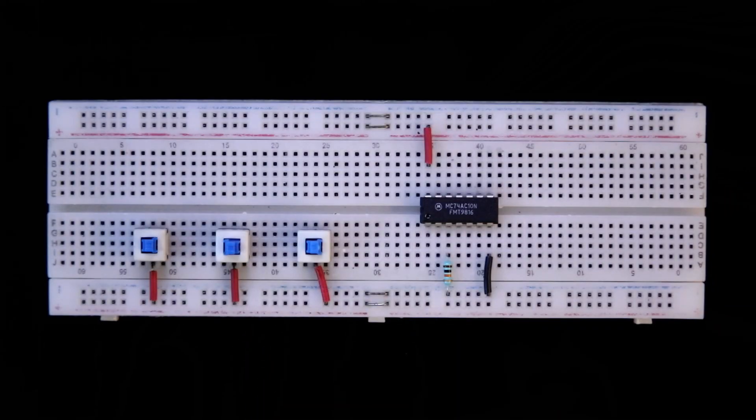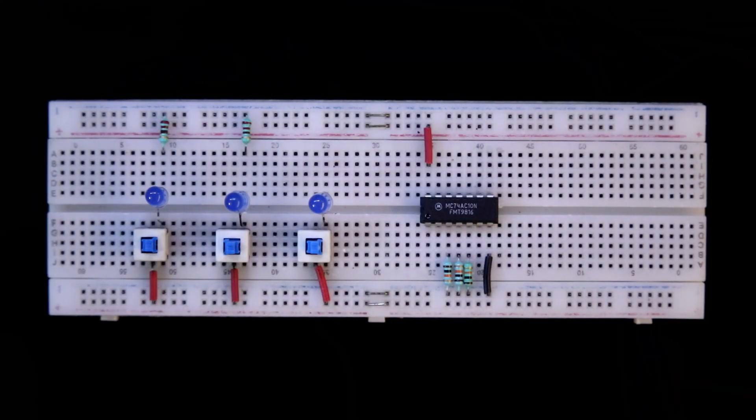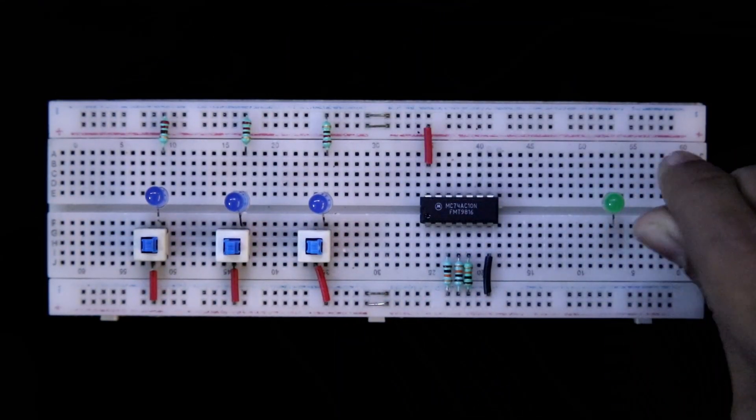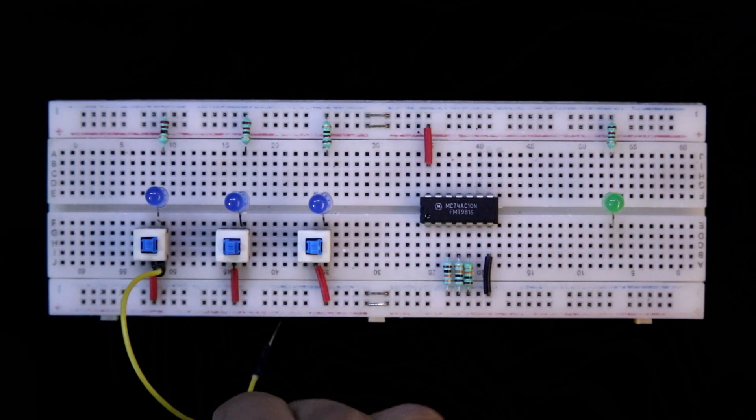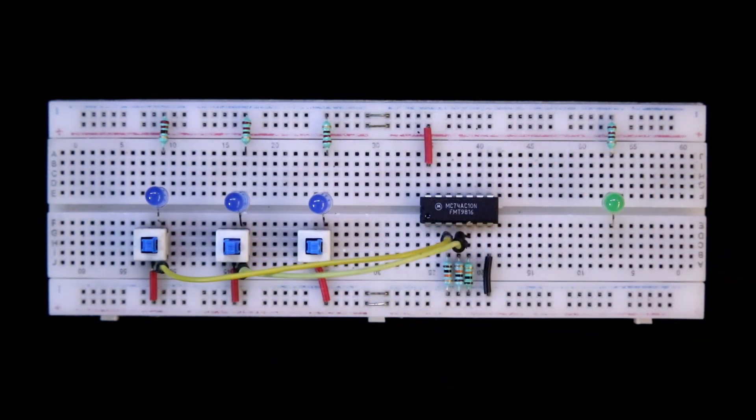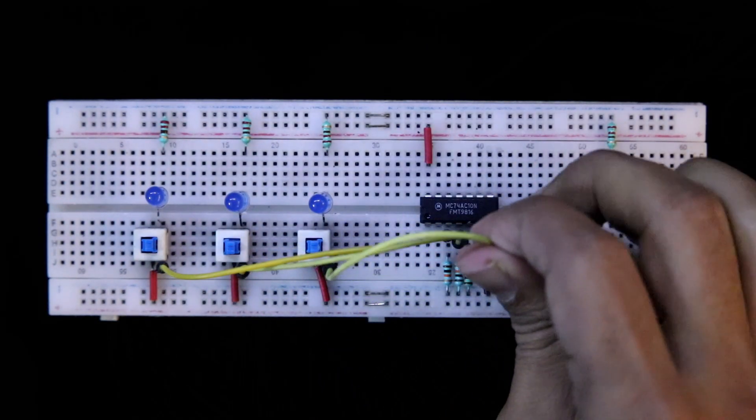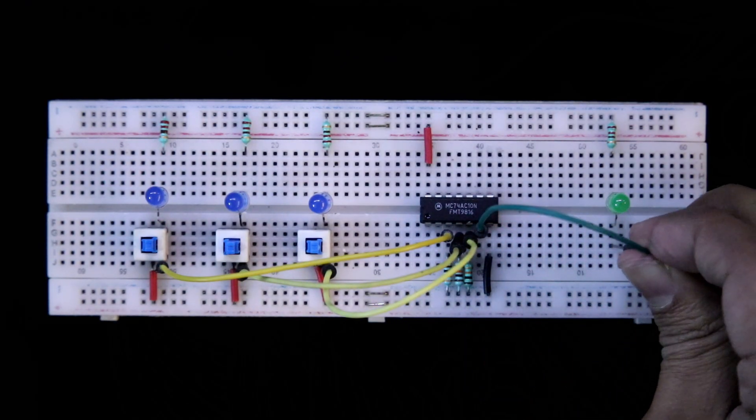Pull down resistors are connected to pins 3, 4, 5. Connecting the input LEDs with the resistors. This is the output LED, and here is the resistor. Switch A is connected to pin 3, Switch B is connected to pin 4, and Switch C is connected to pin 5. And with the output LED connecting pin 6.